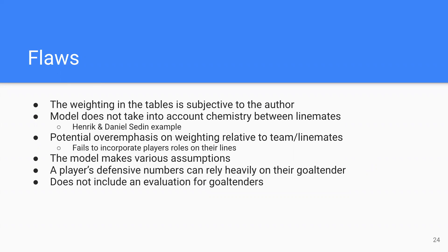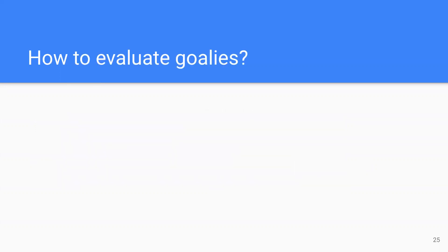Additional flaws: a player's defensive numbers rely heavily on their goalie. If you have a goalie like Andrei Vasilevsky — considered the best in the world — backing up your end, that's a big factor in why you're not giving up many goals, and this model doesn't really account for that. The paper doesn't look at goalies at all, but obviously they can be a really big contributor to your team.